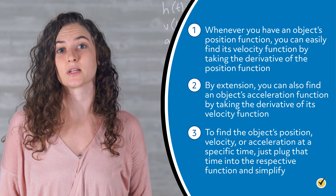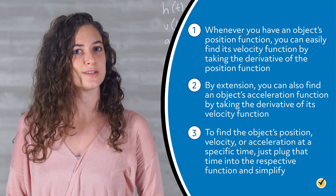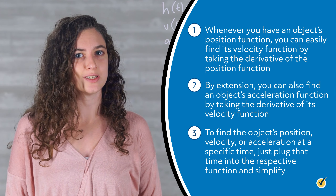Whenever you have an object's position function, you can easily find its velocity function by taking the derivative of the position function. By extension, you can also find an object's acceleration function by taking the derivative of its velocity function. And to find the object's position, velocity, or acceleration at a specific time, just plug that time into the respective function and simplify. I hope that this video was helpful. Thanks for watching and happy studying!